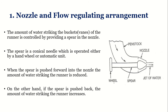The first component is the nozzle and flow regulating arrangement. Looking at the figure for the nozzle and spear arrangement, you can see the penstock through which water flows. Penstocks are pipes of very large diameter, so if water falls directly on the turbine we do not get good velocity or kinetic energy. Therefore, we fit a nozzle so that as the area of flow decreases, the velocity increases. Water entering through the penstock passes through the nozzle and behaves like a jet, falling on the runner of the turbine.